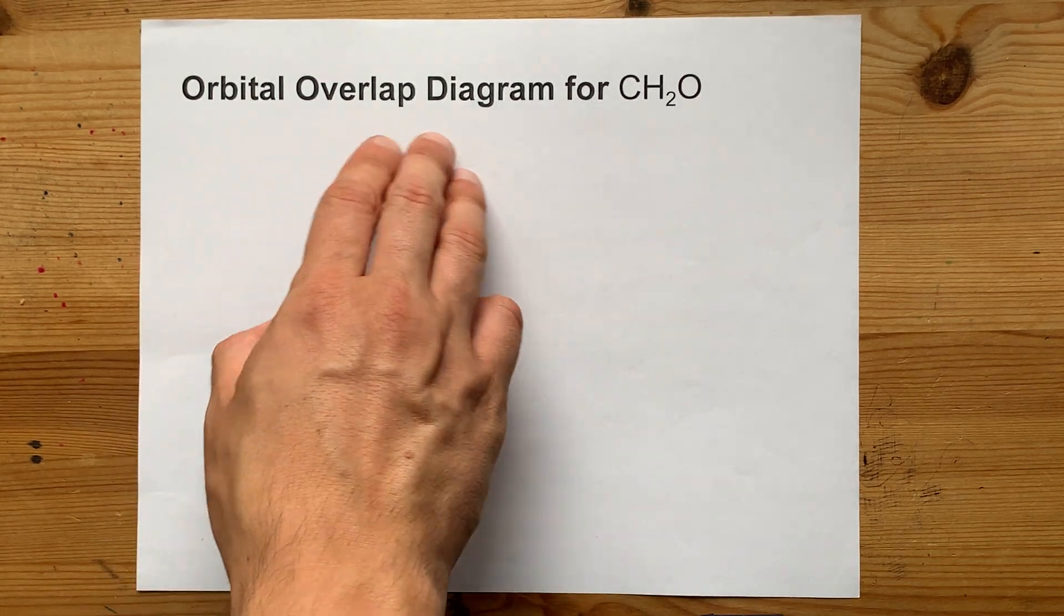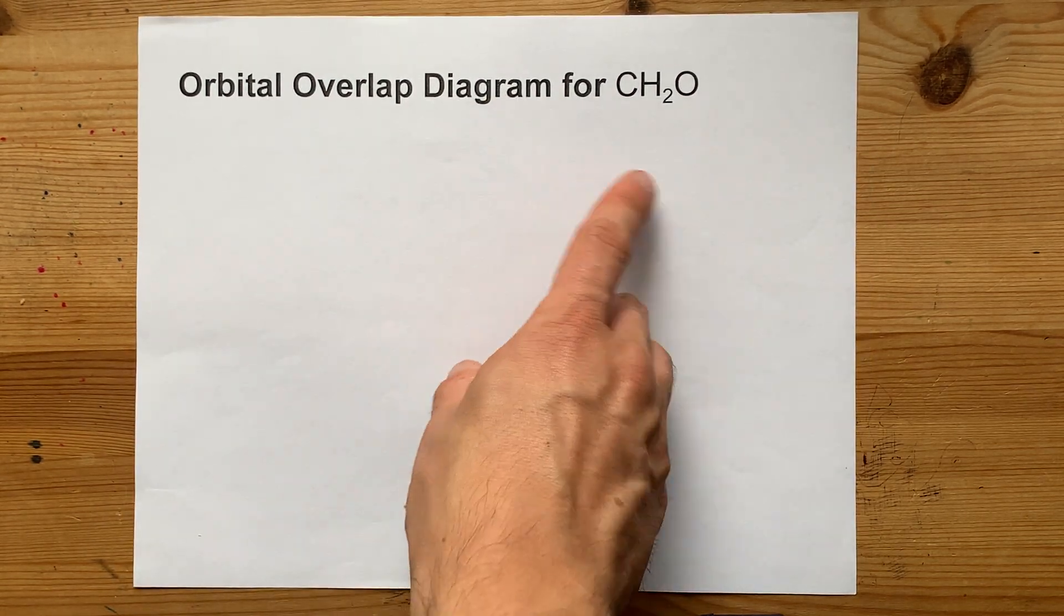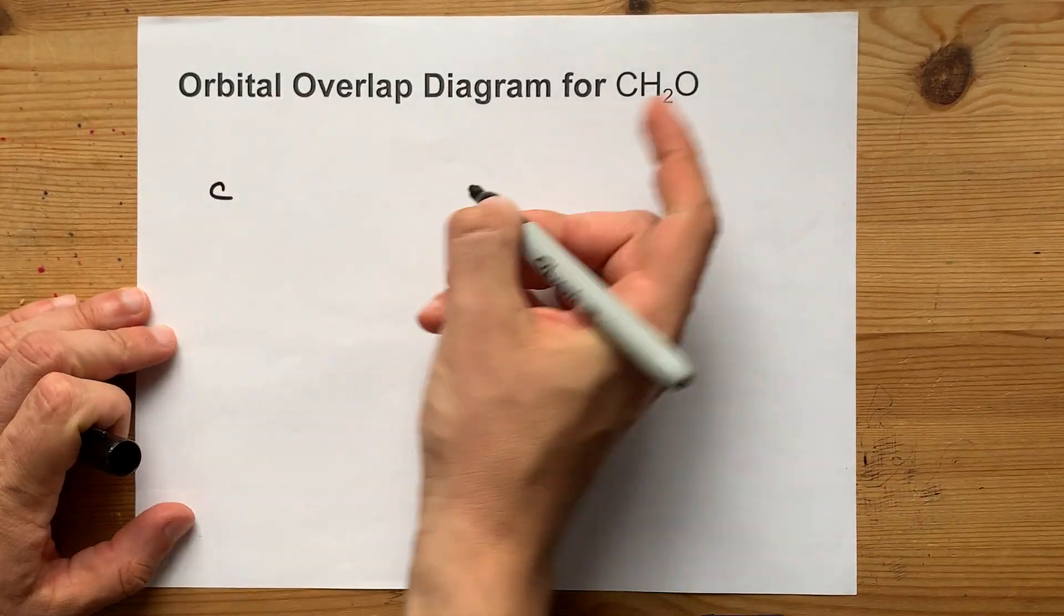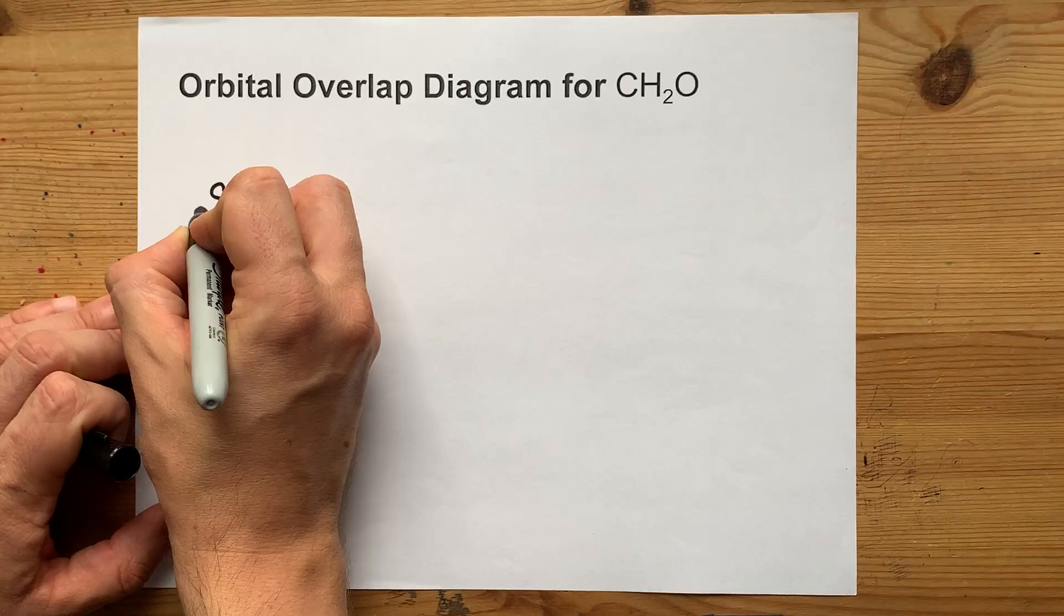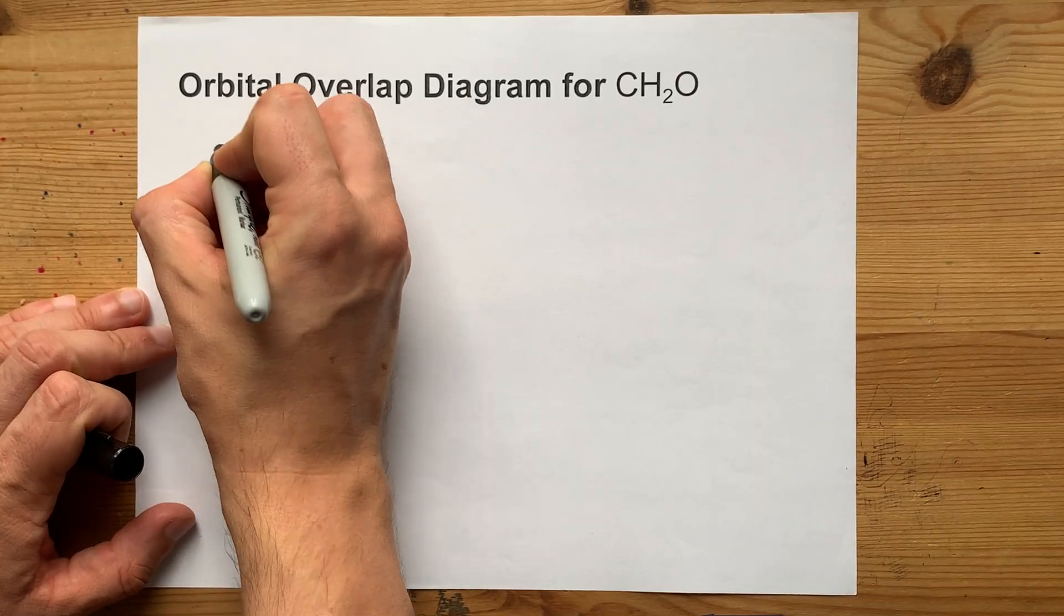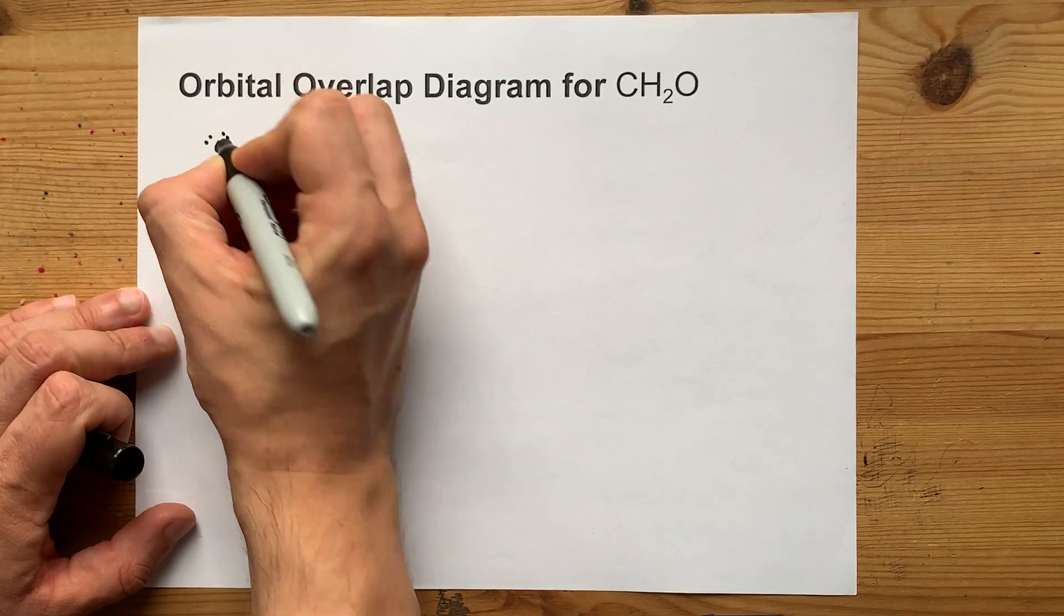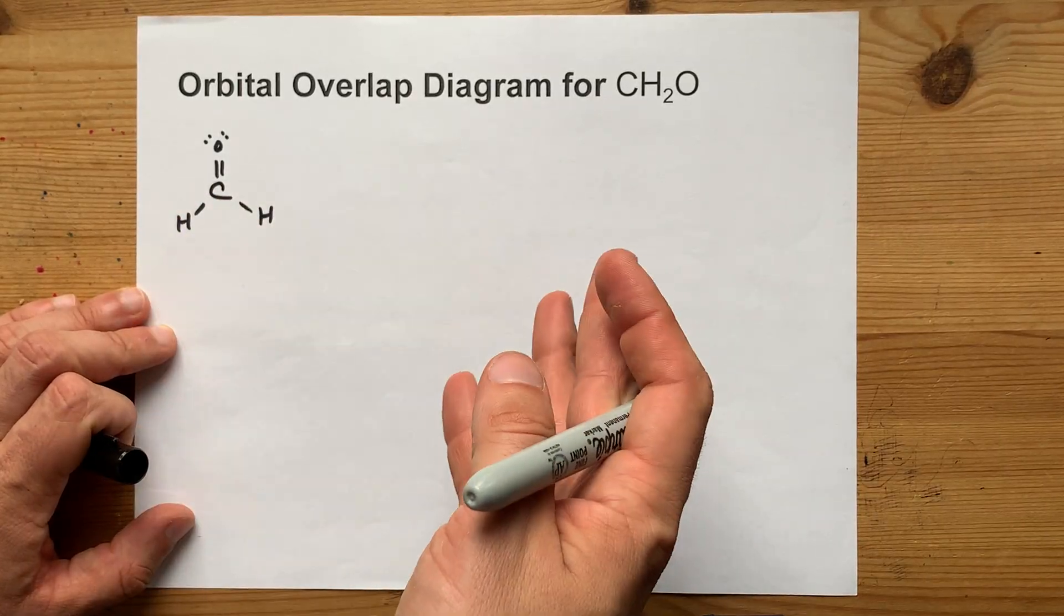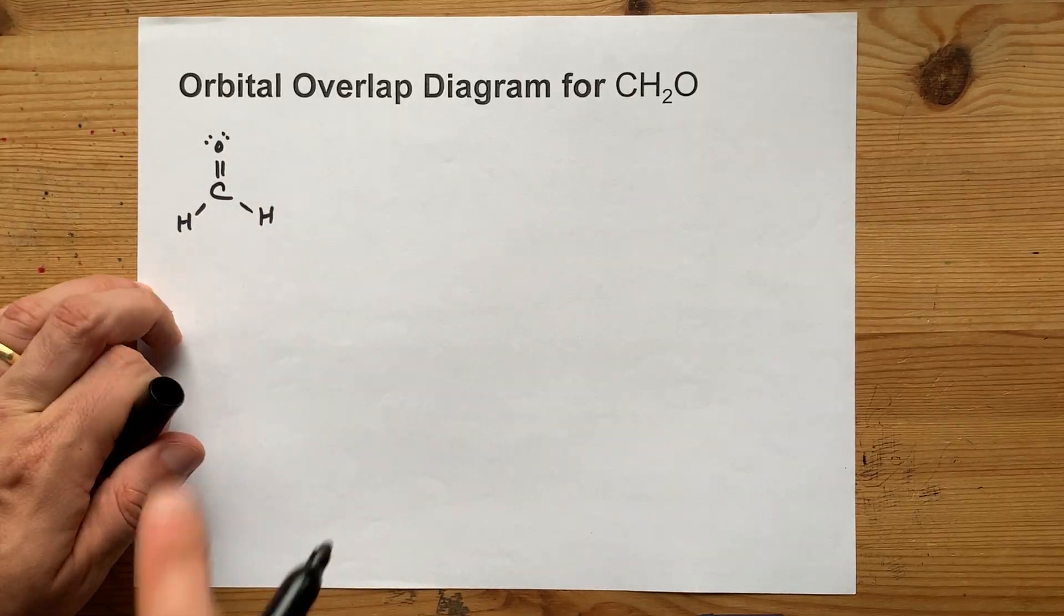We're going to draw the orbital overlap diagram for formaldehyde or methanal. Now this is a carbon atom bonded to two hydrogens and an oxygen. In order for the Lewis dot structure to work, in order for all of the octet rules to be satisfied here, you need a double bond with the oxygen.